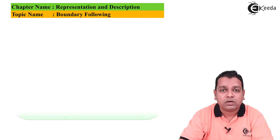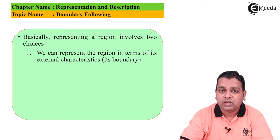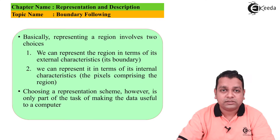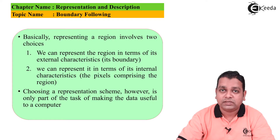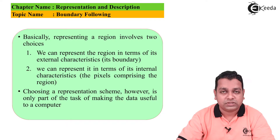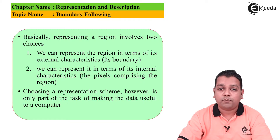To talk about representation of a region, it involves two choices. The first choice is we can represent the region in terms of its external characteristics, that is with respect to the boundary. The second choice is we can represent it in terms of its internal characteristics, that is with reference to the pixels comprising the region. Choosing a representation scheme is only part of the task of making the data useful to a computer.